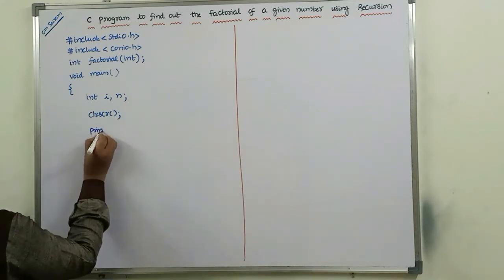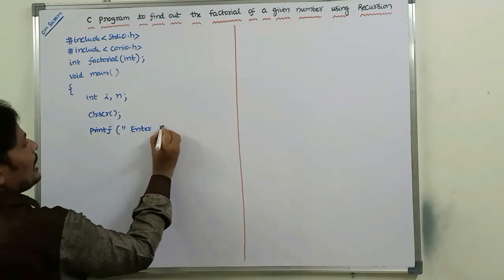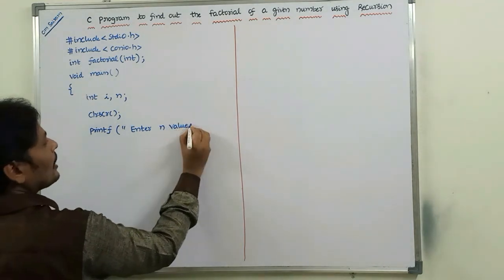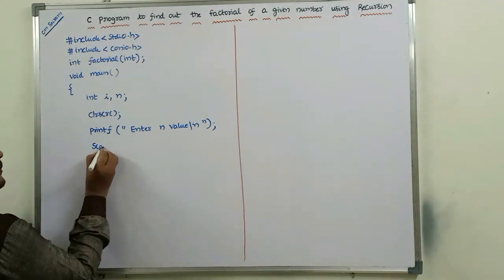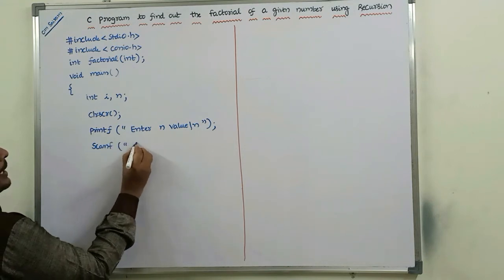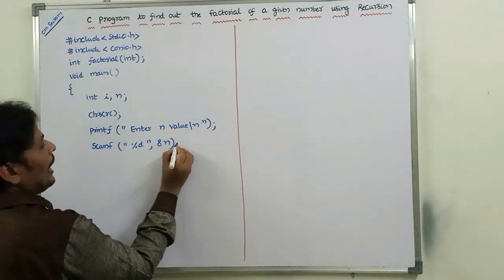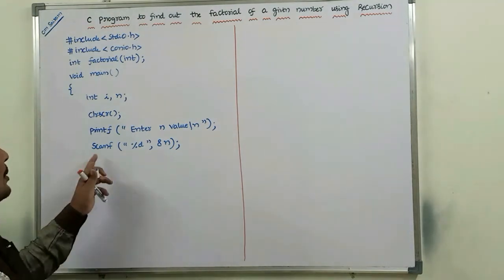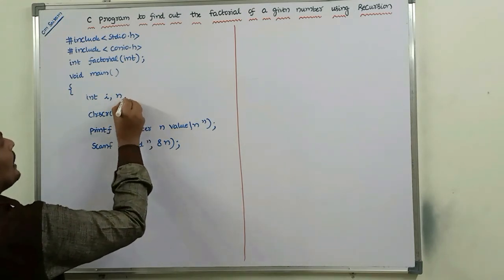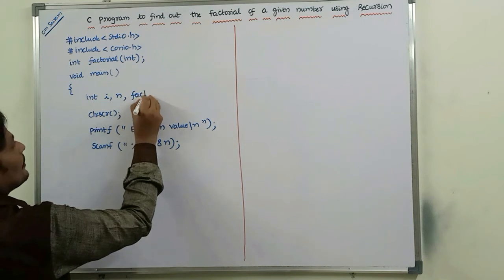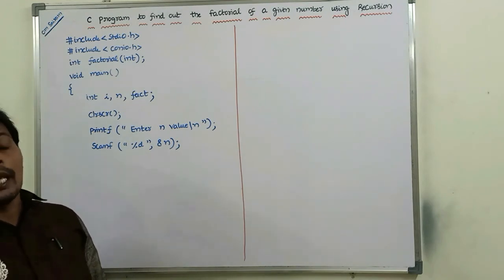Next, printf — "Enter n value". This n value is read from the keyboard by using the scanf function. Next, I am declaring another variable called fact. In this variable, we are storing the result of the factorial of the given number.